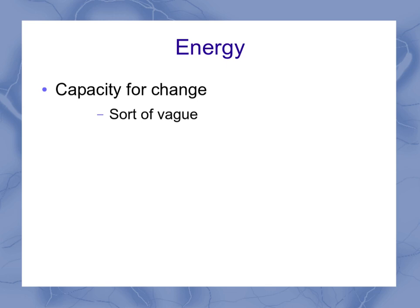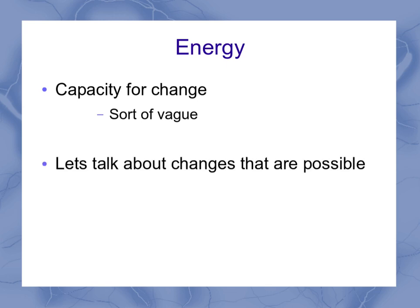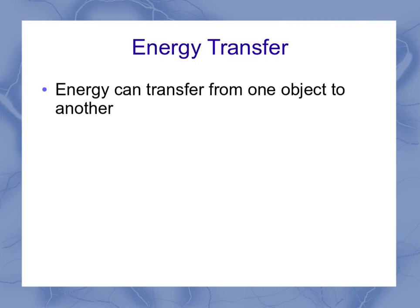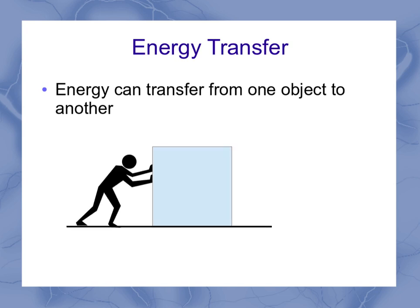Focusing in on this concept of change, let's talk a little bit more about what changes are possible. One is an energy transfer — energy can be transferred from one object to another. An example of this could be as simple as a person pushing on a box. The person is using their own energy to push on that box, and it results in the box getting a little bit of that energy as it moves.